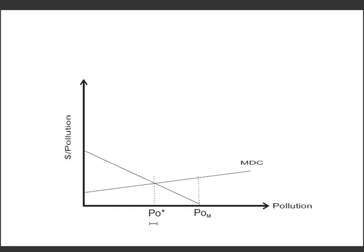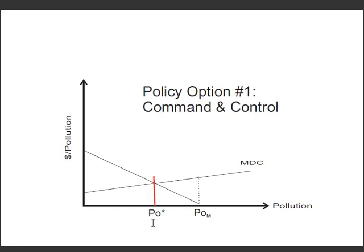We're going to look at three main types of policy options. The first option is what we call command and control. Theoretically this is the easiest approach — we simply say you're going to have to stop at PO*. The government might use a set of policies designed to restrict the quantity of pollution that is emitted. That requires an awful lot of knowledge, but if you've got the knowledge, you can actually move us from POM back to PO*, an efficient outcome.